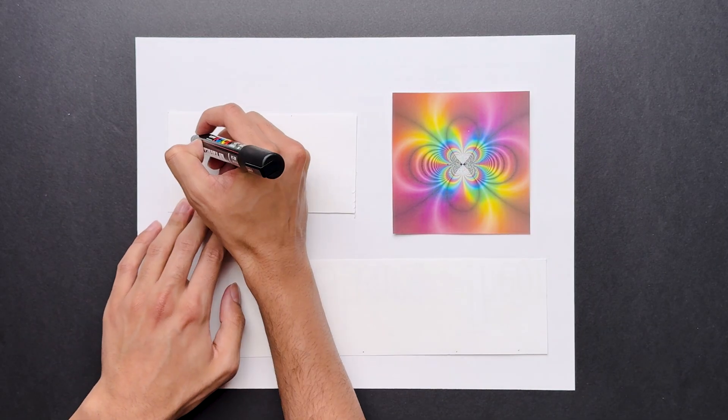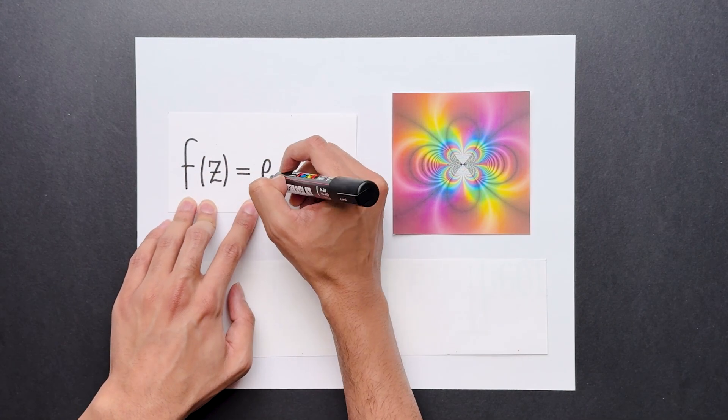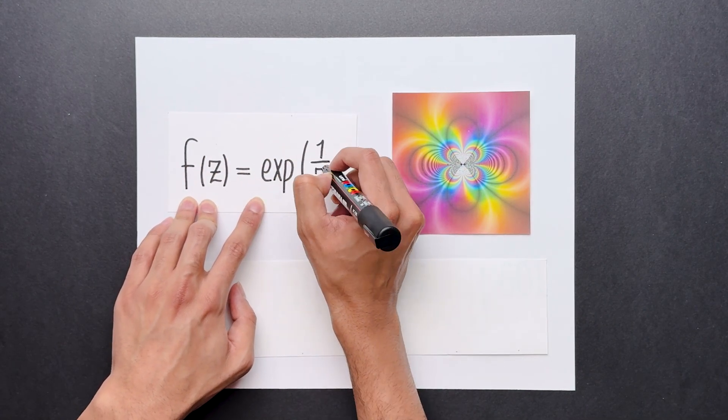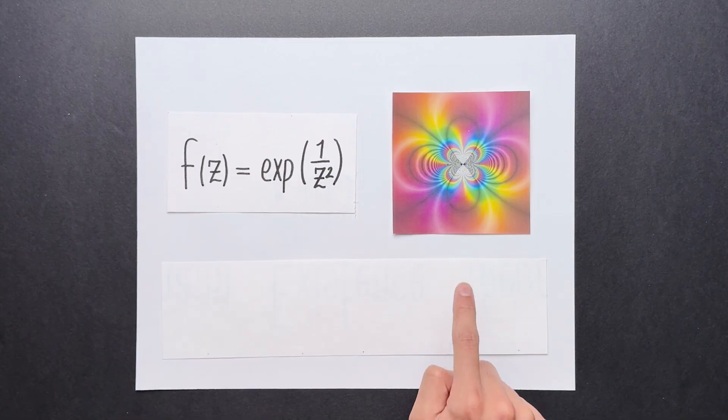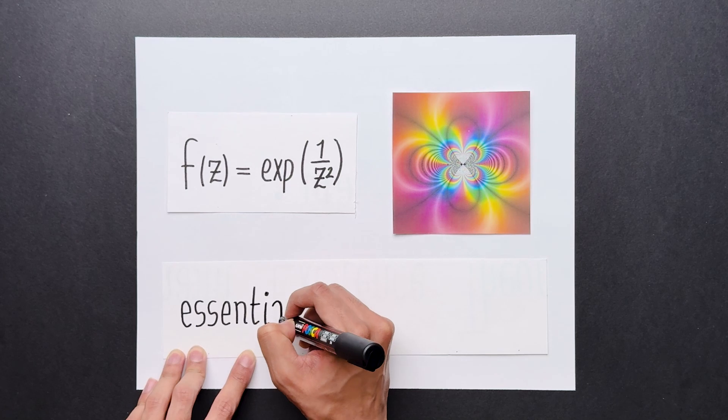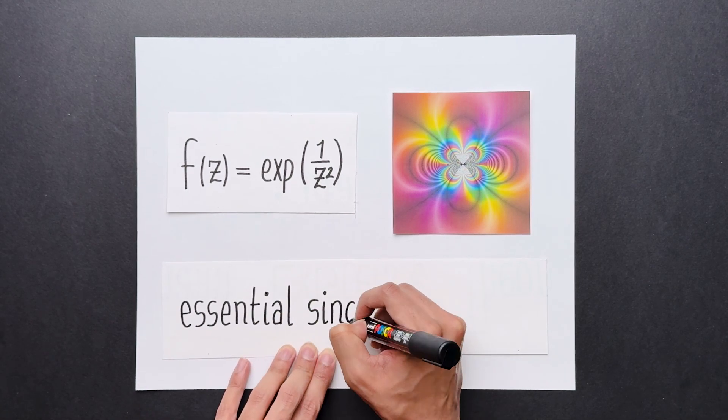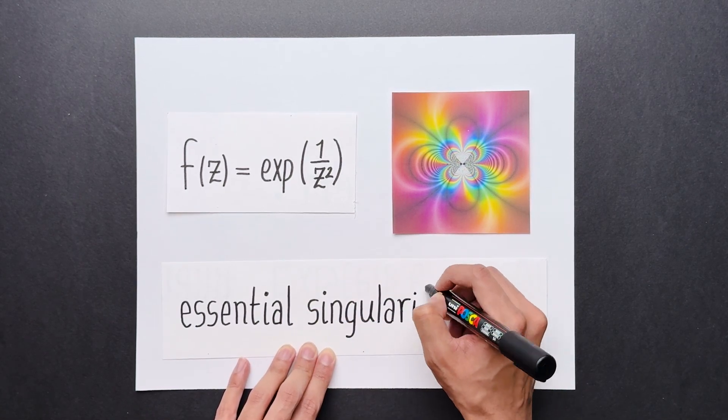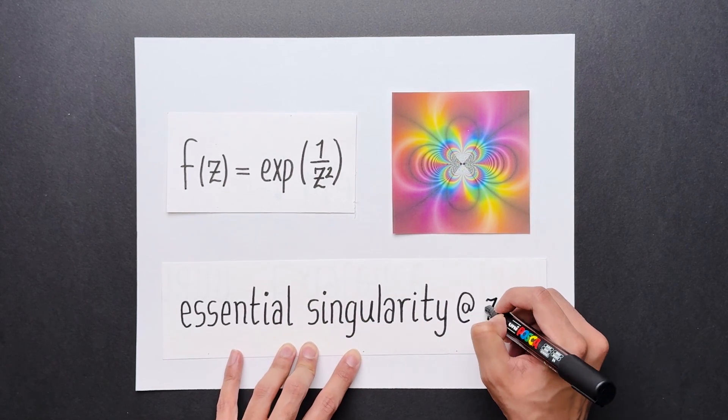Now consider this function over here. f of z equals exp of one over z squared. It looks really weird around the origin. Now this is neither a zero nor a pole. It's something called an essential singularity. Roughly put, an essential singularity is a point where the function exhibits very erratic behavior. We're going to view these functions as pathological.